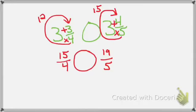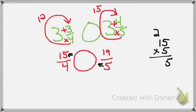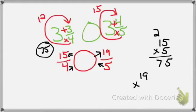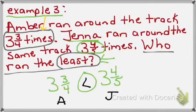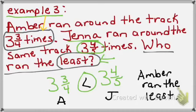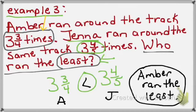Now that I have full fractions, I can go ahead and cross-multiply. I'm going to say my 5 times my 15 — using a little scrap paper — and I find out that 15 times 5 equals 75. I'll circle it so I don't get confused. Now I have 4 times 19 — again, I'll use some scrap paper — and I find out that 19 times 4 equals 76. So using greater than, less than, or equal to: 75 is less than 76. Therefore Amber ran less than Jenna. The question says who ran the least — Amber ran the least. That's my final answer.